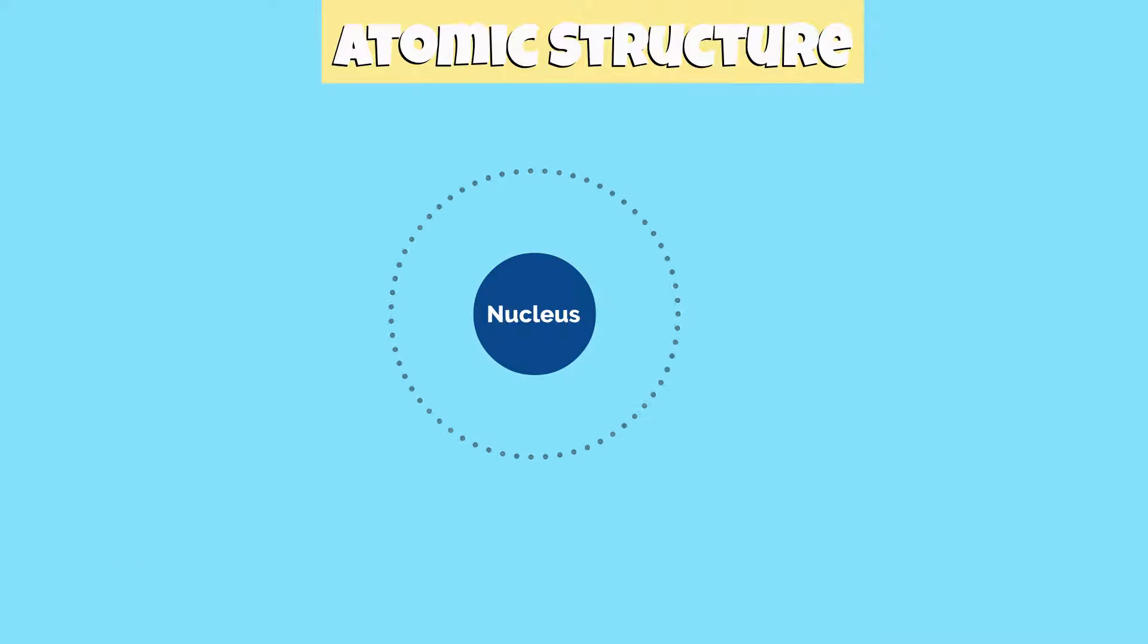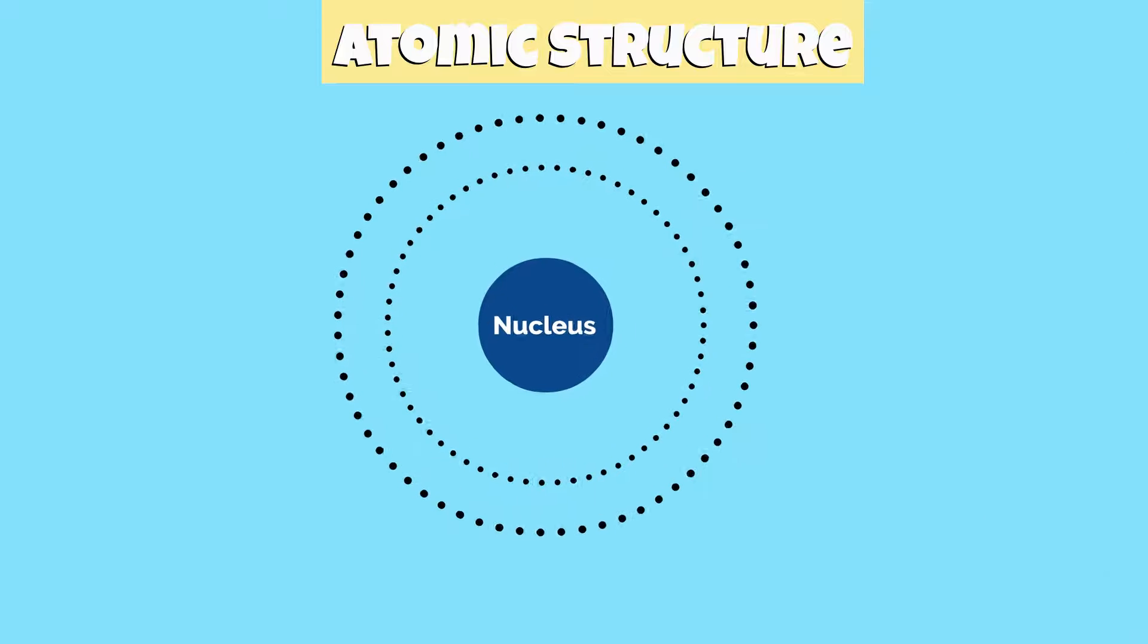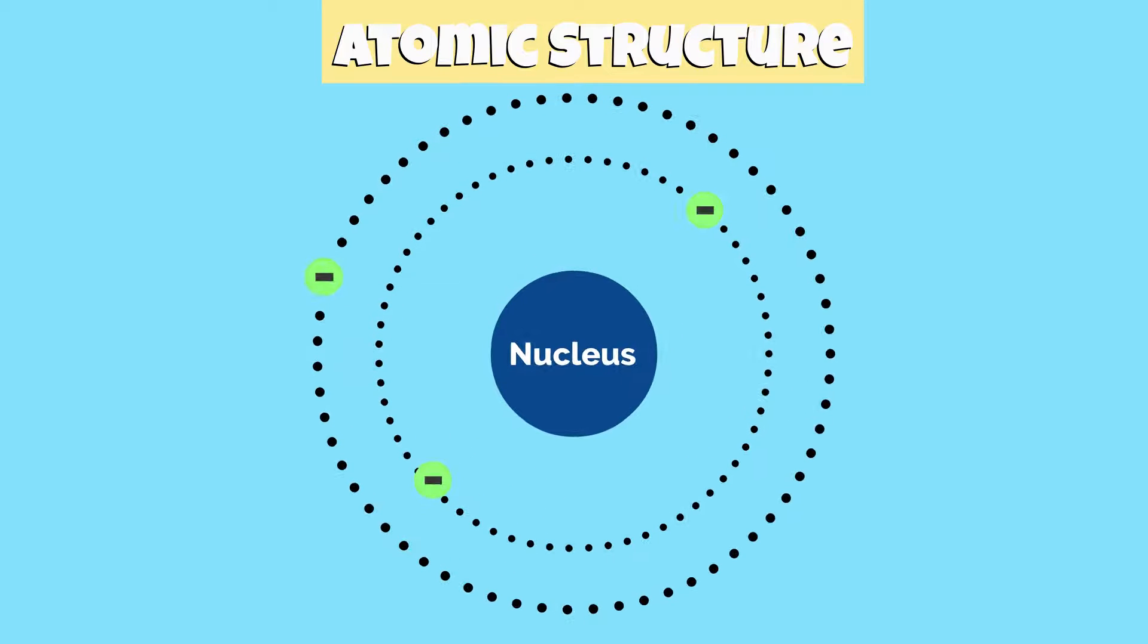The electron cloud has different energy levels called shells or orbitals in which electrons are bound. Each energy level or orbital has a limit to how many electrons it can hold.